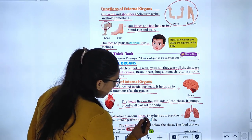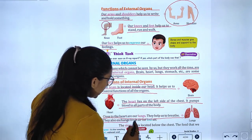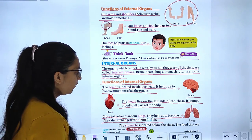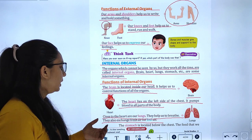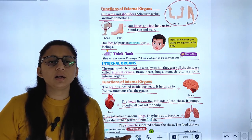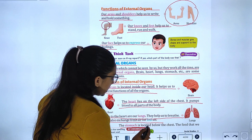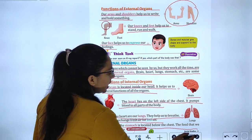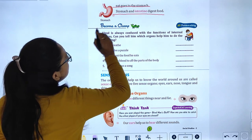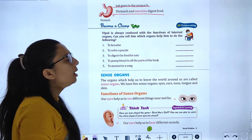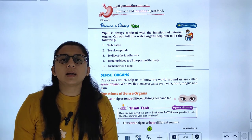Close to the heart are the lungs. They help us to breathe and to exchange air — inhaling fresh air and exhaling used air. The stomach is located below the chest. The food that we eat goes to the stomach, where it is digested.